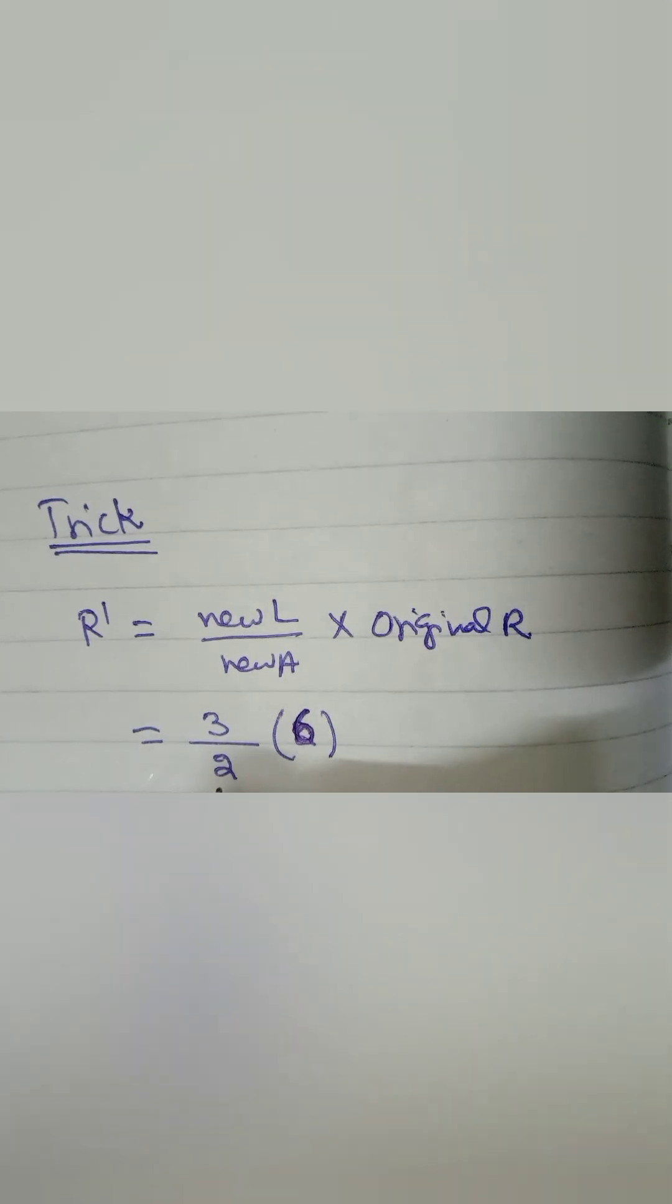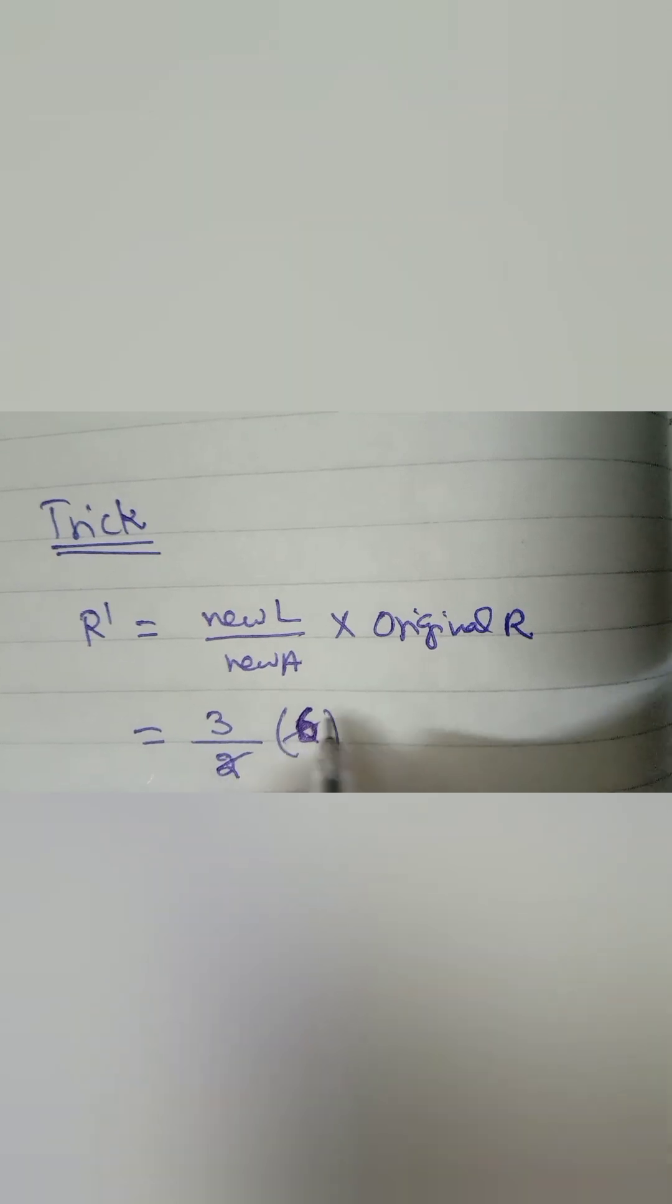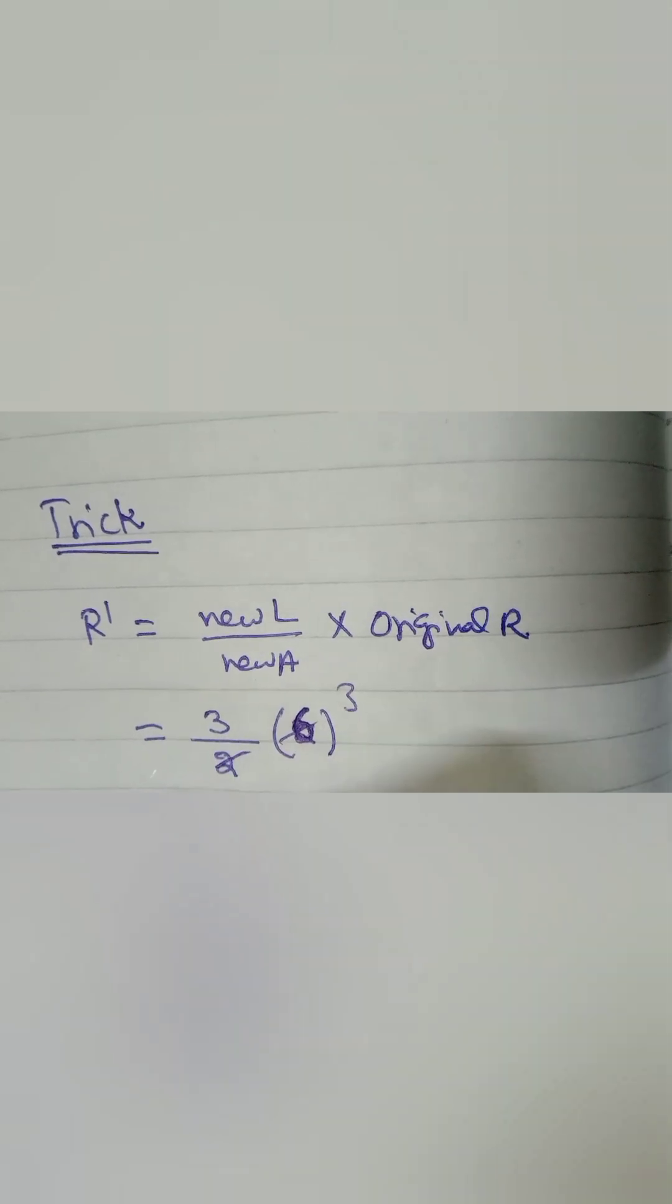Just divide 3/2 into the original resistance. Our original resistance was 6 ohms. So you see here you obtain the answer 9 ohms as solved with the theoretical method. This is an easy way to solve it quickly.